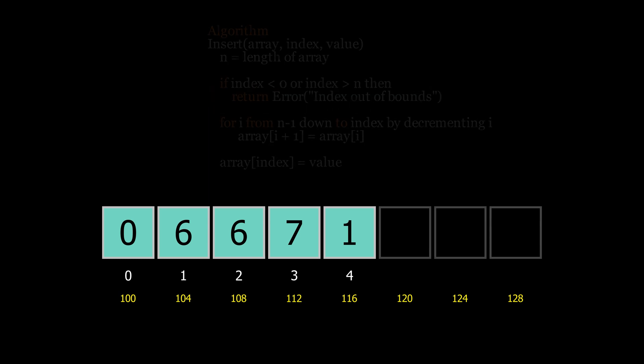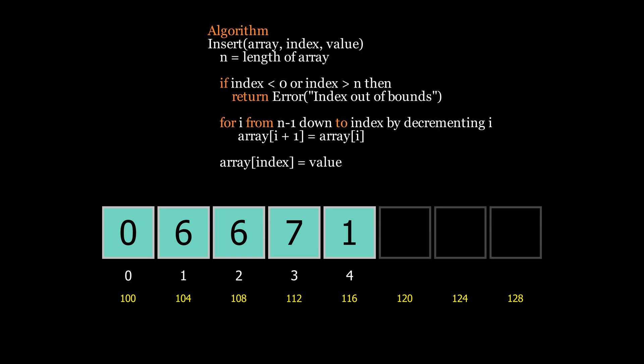Now the next operation is inserting the element. So here we have the function insert that takes array, index, and the value as parameters. Then similarly n is the length of the array, and then there is a condition that will check whether index is out of bound or not. Now this loop will shift all the elements from the given index to the end one step to the right to make space for the new element. And lastly this code will add the new element to the index.